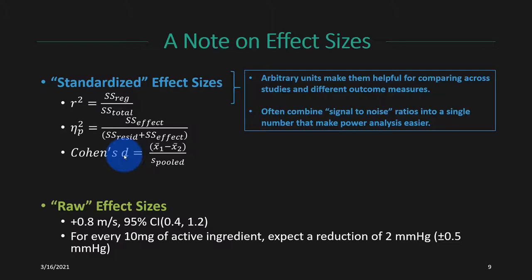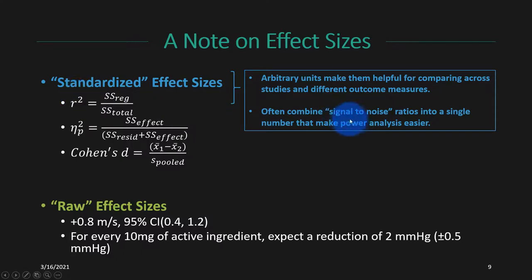Also, these measures usually make some combination of a signal-to-noise ratio — some combination of the raw effect size and the variance — that makes it easier to do power calculations. In future videos, when doing a power calculation, we'll often start with a Cohen's D, partial eta-squared, or r-squared because that makes the math of the power calculation easier.